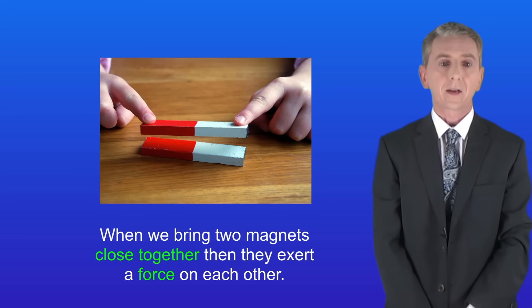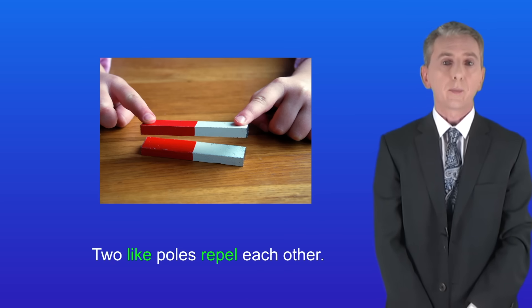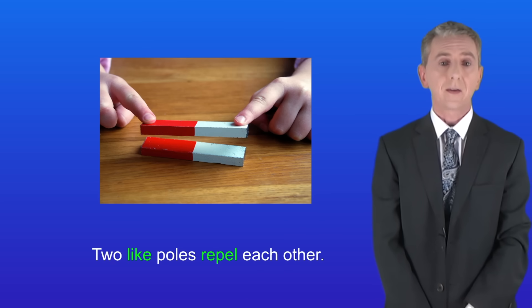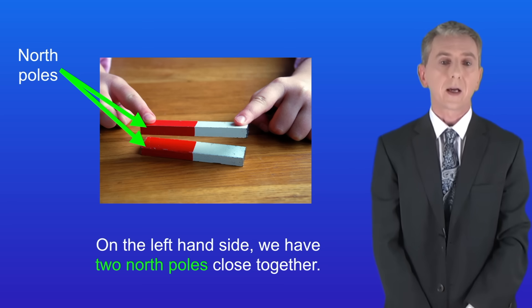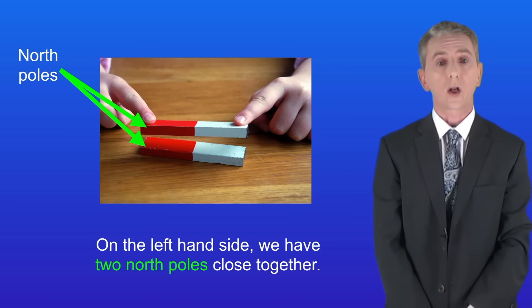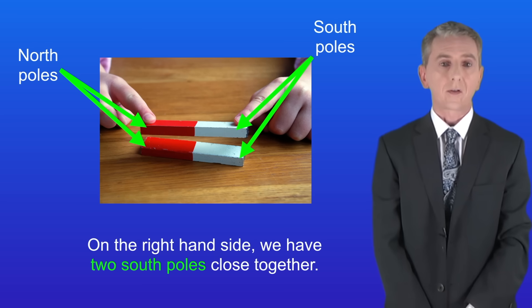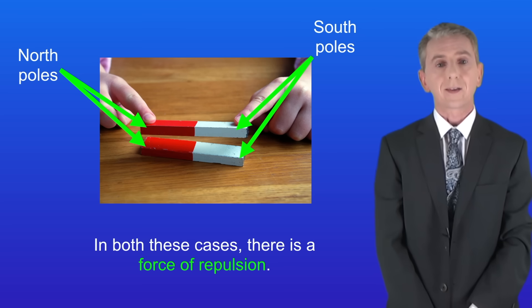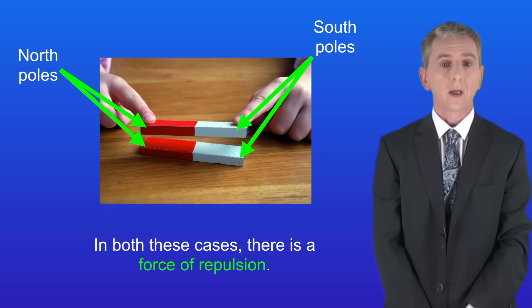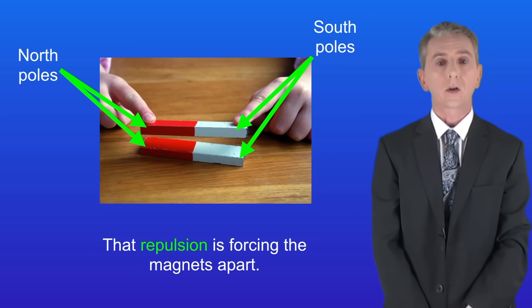When we bring two magnets close together then they exert a force on each other. Two like poles repel each other. On the left hand side we've got two north poles close together and on the right hand side we've got two south poles close together. In both these cases there's a force of repulsion forcing the magnets apart.